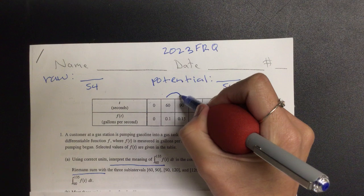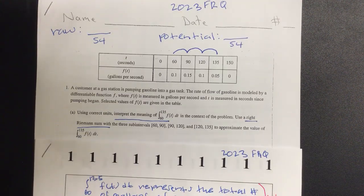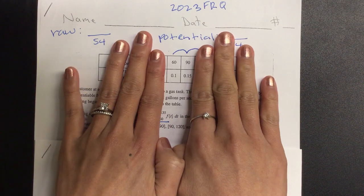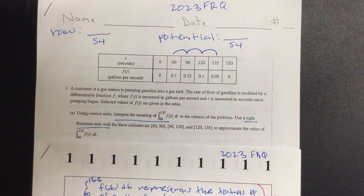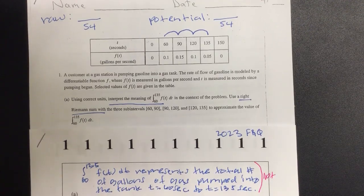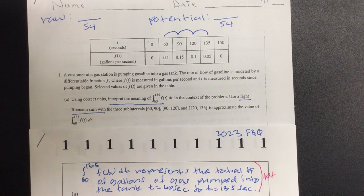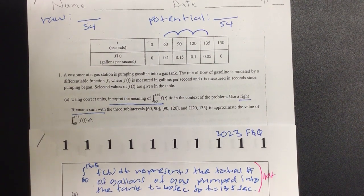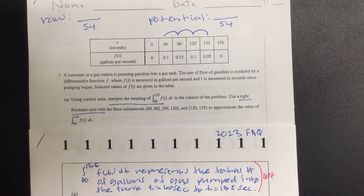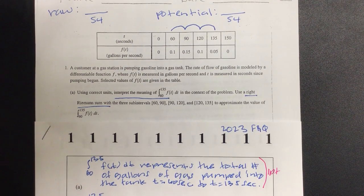The next one says, now to use the right Riemann sums. And then we have three subintervals. So for our subinterval, notice it's going from 60 to 135. We are not including zero. We are not including that 150. Okay? So if I jump, one, two, and three. So my right Riemann sum is from here. What number's on the right, on our Y value? 0.15. So let's go ahead and put on here, integral from 60 to 135, F of T DT.